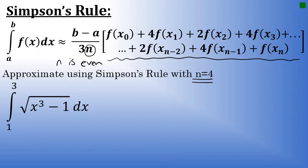So, applying Simpson's rule means the integral from 1 to 3 of the square root of x to the third minus 1 dx is approximately equal to the leading coefficient in front of the brackets, b minus a, in this case, 3 minus 1, all over 3n. Our value of n is 4, so it's over 3 times 4.